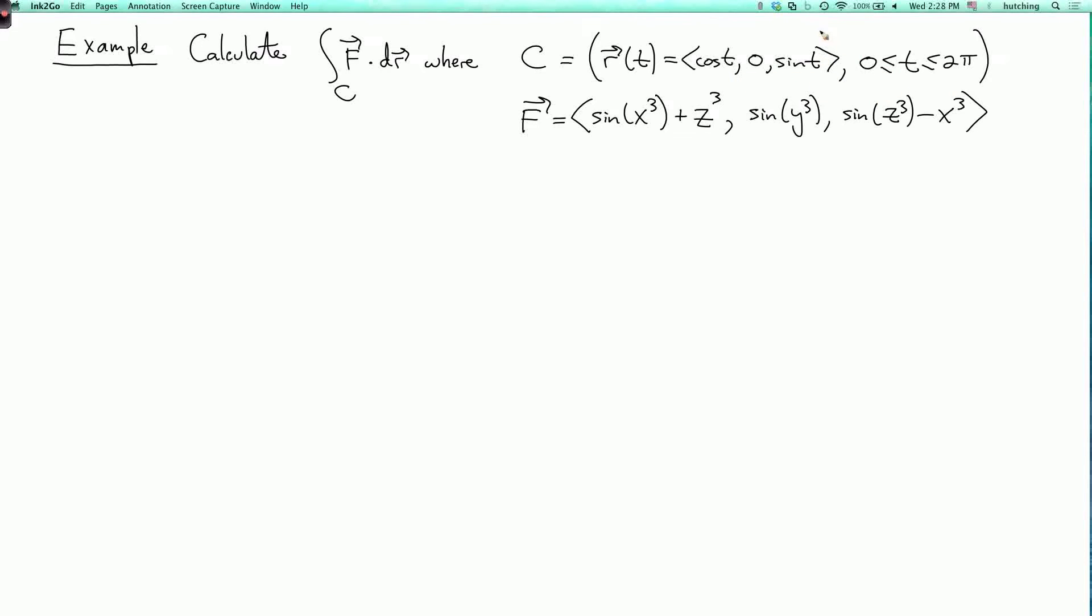In other words, this is the unit circle in the x-z plane, oriented as described by this equation, and f is the vector field (sin(x³ + z³), sin(y³), sin(z³ - x³)).